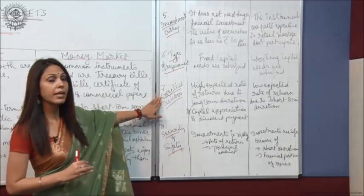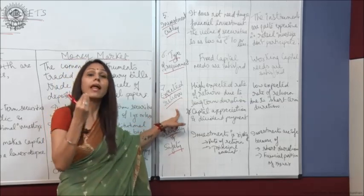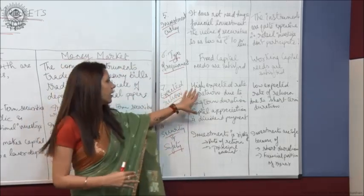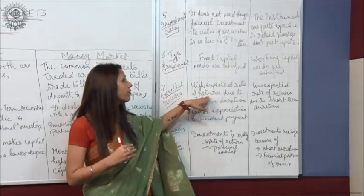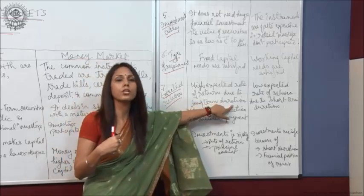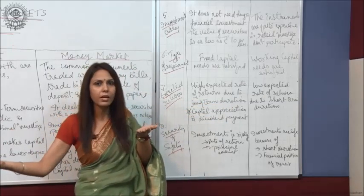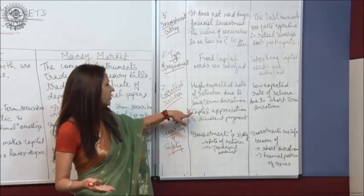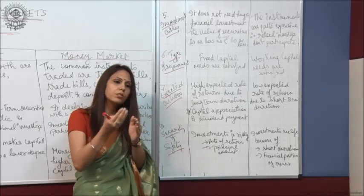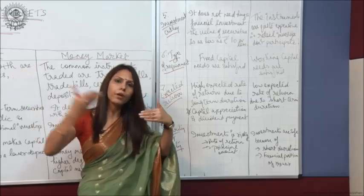The seventh point is expected return. There is a high expected rate of return in capital market due to long term duration. The amount is invested for a longer period of time in securities, and therefore there are chances of capital appreciation — meaning the amount invested can appreciate due to the long period of time.